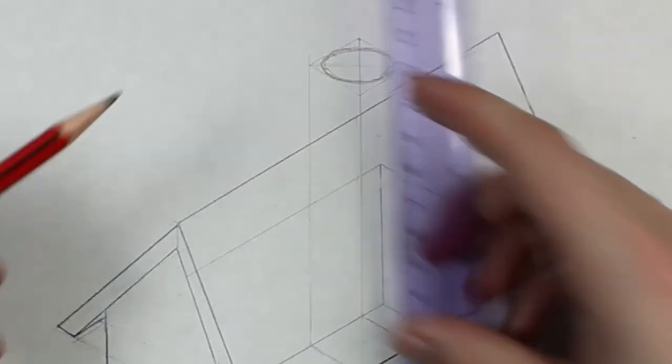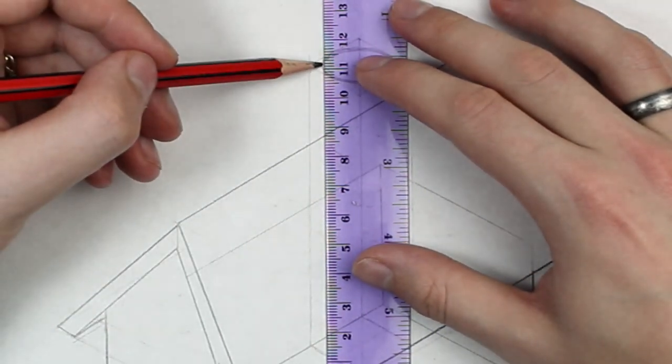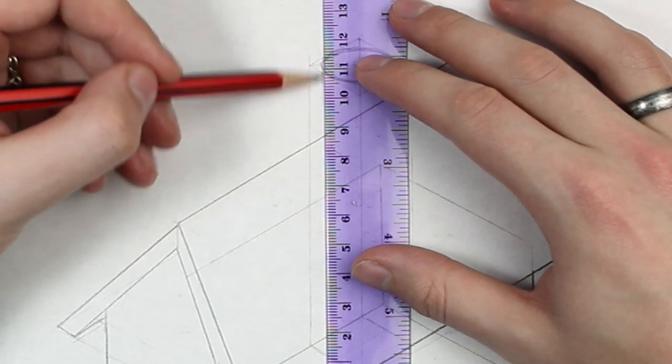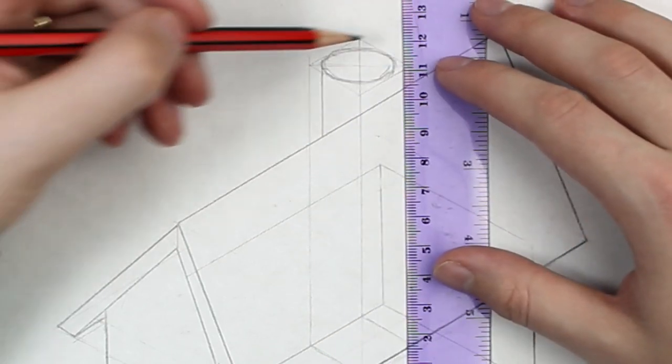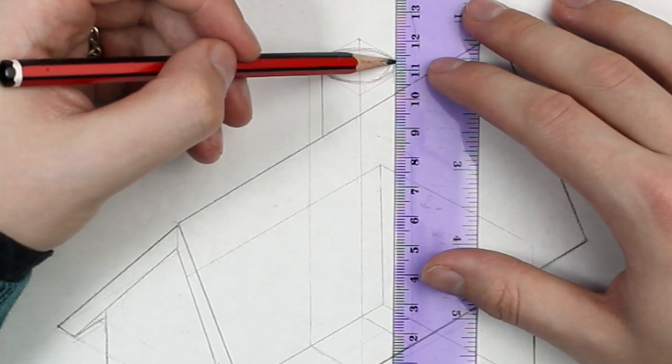Now, because this circle is going to become a chimney, a cylinder, I can add two vertical lines on either side of my circle. Once I've done that, I can rub out the construction lines, because I don't need them anymore.